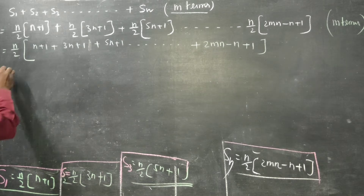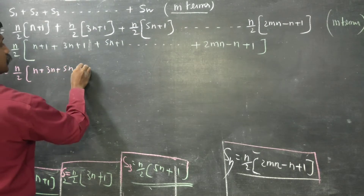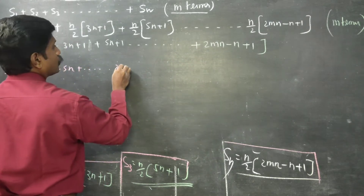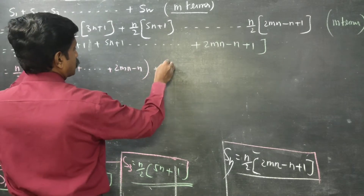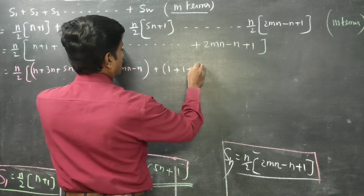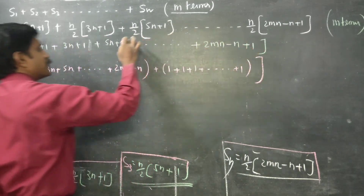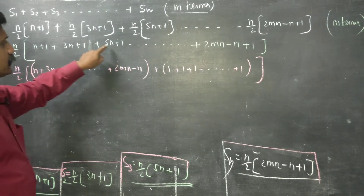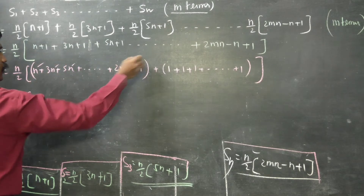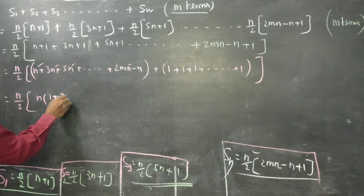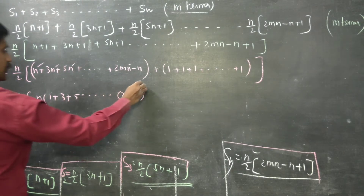Separating the n terms and the constant terms: n by 2 times the group of n, 3n, 5n, ..., 2mn minus n; and then separately plus 1 plus 1 plus 1... The sum of the constant terms is plus 1 repeated. The n-coefficient series is 1, 3, 5, ..., 2m minus 1.